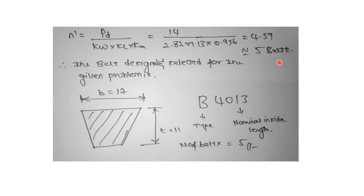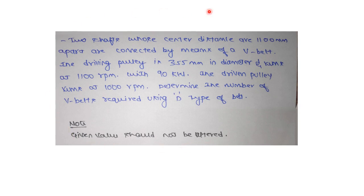The number of belts required for this problem is 5 belts. At the end, write a result statement and draw the cross-section indicating the width, thickness, belt type, nominal inside length, and number of belts. Doing this will earn more marks as the evaluator can assess your work more easily. Try this problem yourself and verify your values.